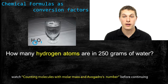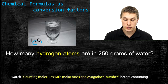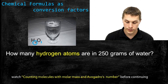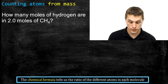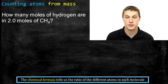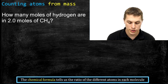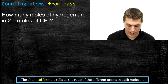For example, if I have two molecules of water, then I'm going to have four atoms of hydrogen because each of those molecules has two. So let me show you how we'd write that as a conversion factor. This question asks: how many moles of hydrogen are in two moles of methane, or CH4?